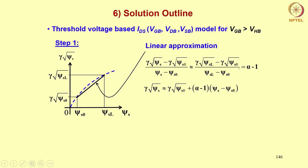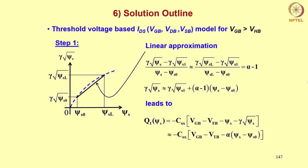Now, if you substitute this expression for γ√ψs in the qi as a function of ψs expression in the surface potential based model, you are replacing this γ√ψs by this entire quantity. You will end up getting qi(ψs) as minus Cox into (Vgb minus Vtb minus α into (ψs minus ψs0)). Let us see how we get that.